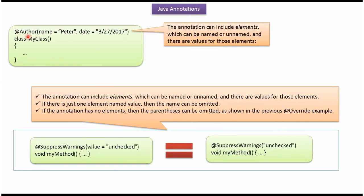Here you can see @Author. Author is the annotation name and here you can see name. Name is the element and Peter is the name element value. Here you can see the date element and here you can see the date element value.